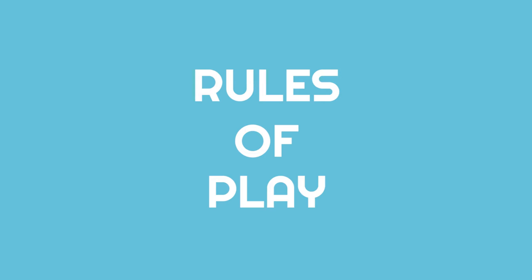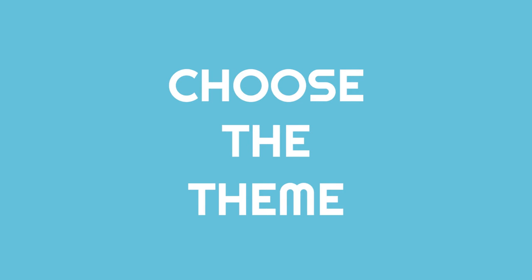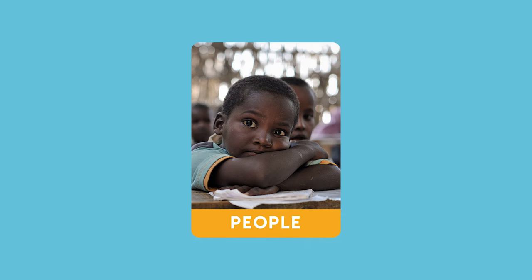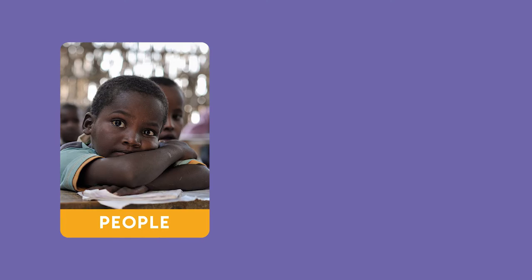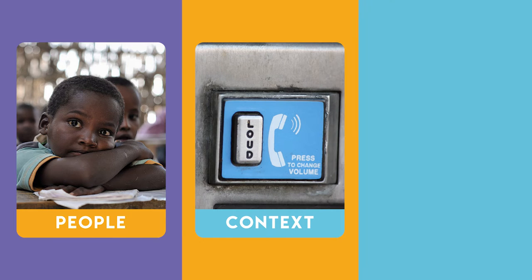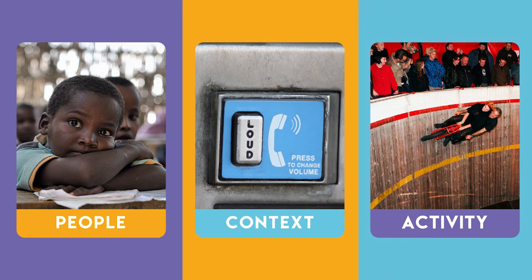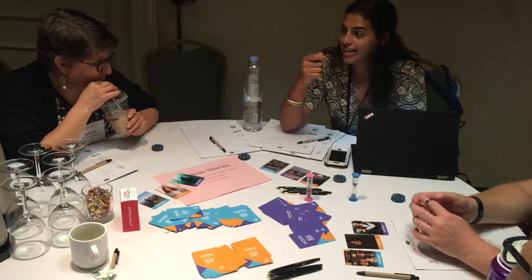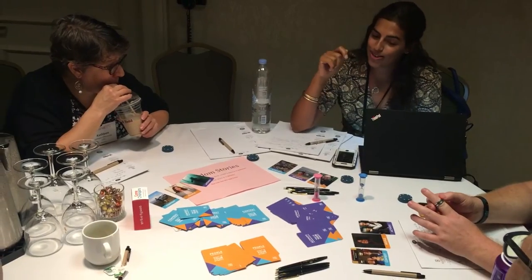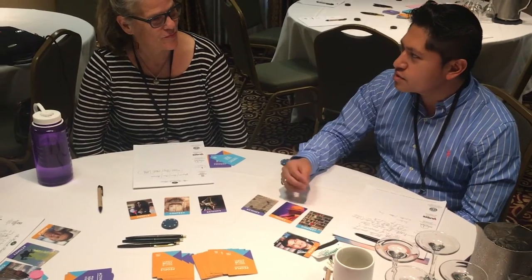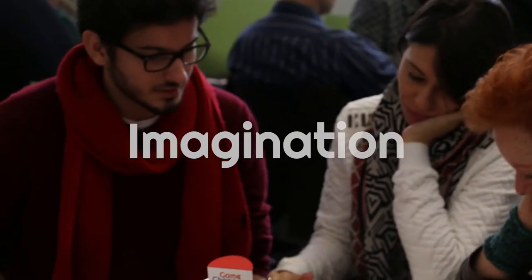The rules of play are as follows: choose the theme of your game. All players draw one card from each element deck. Using your cards as prompts, create a story or narrative concept based on the three elements.